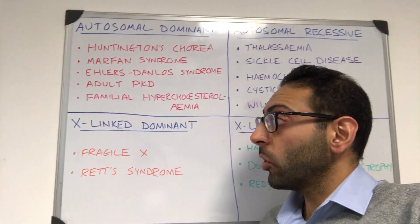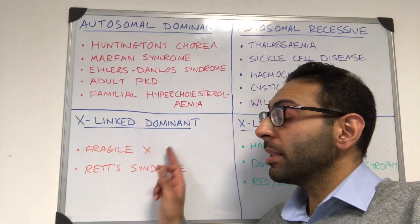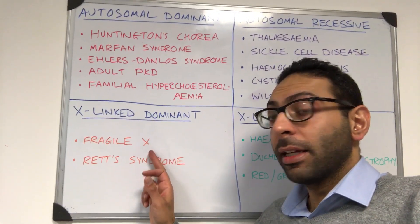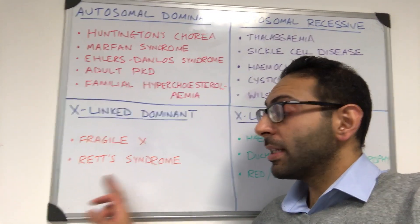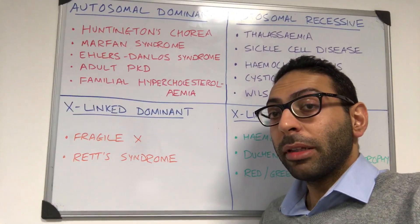Then you've got X-linked. You've got X-linked dominant — things like Fragile X and things like Rett syndrome. Worth remembering those two.